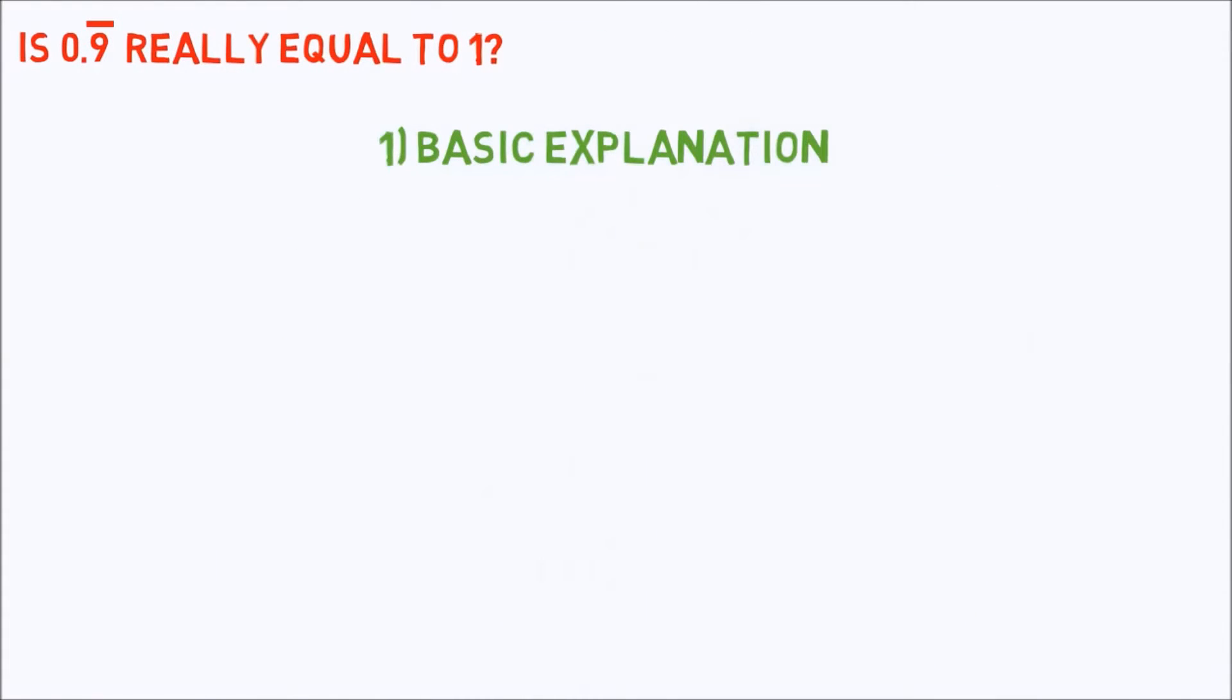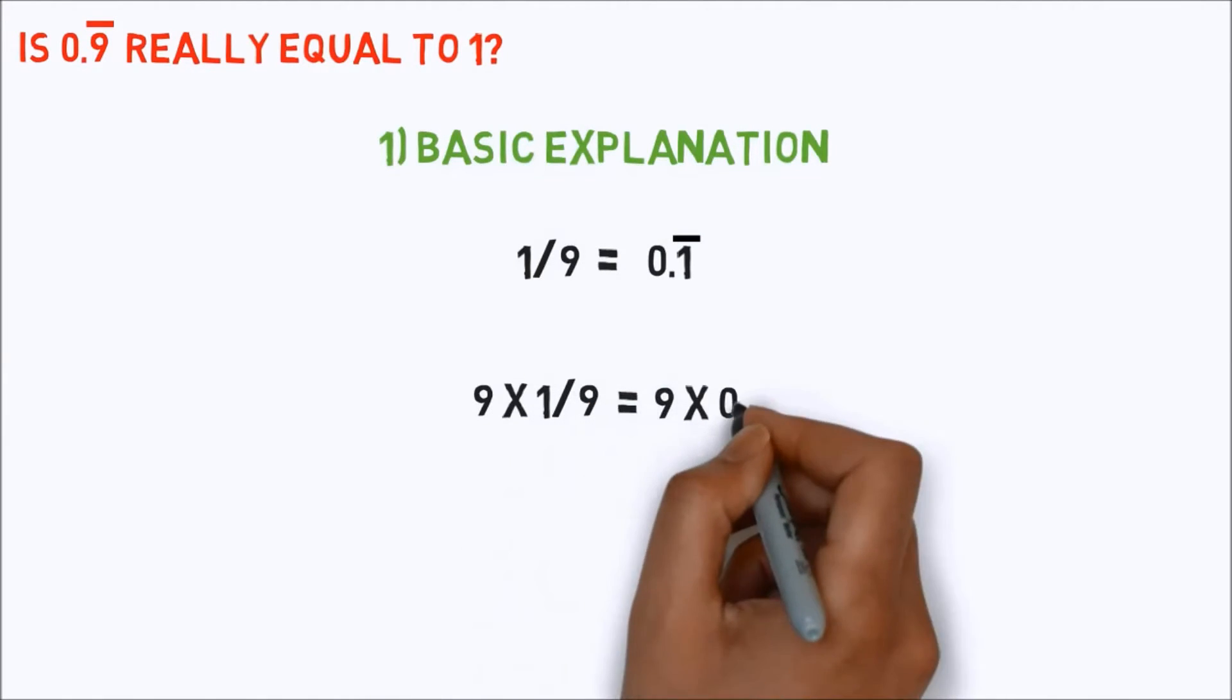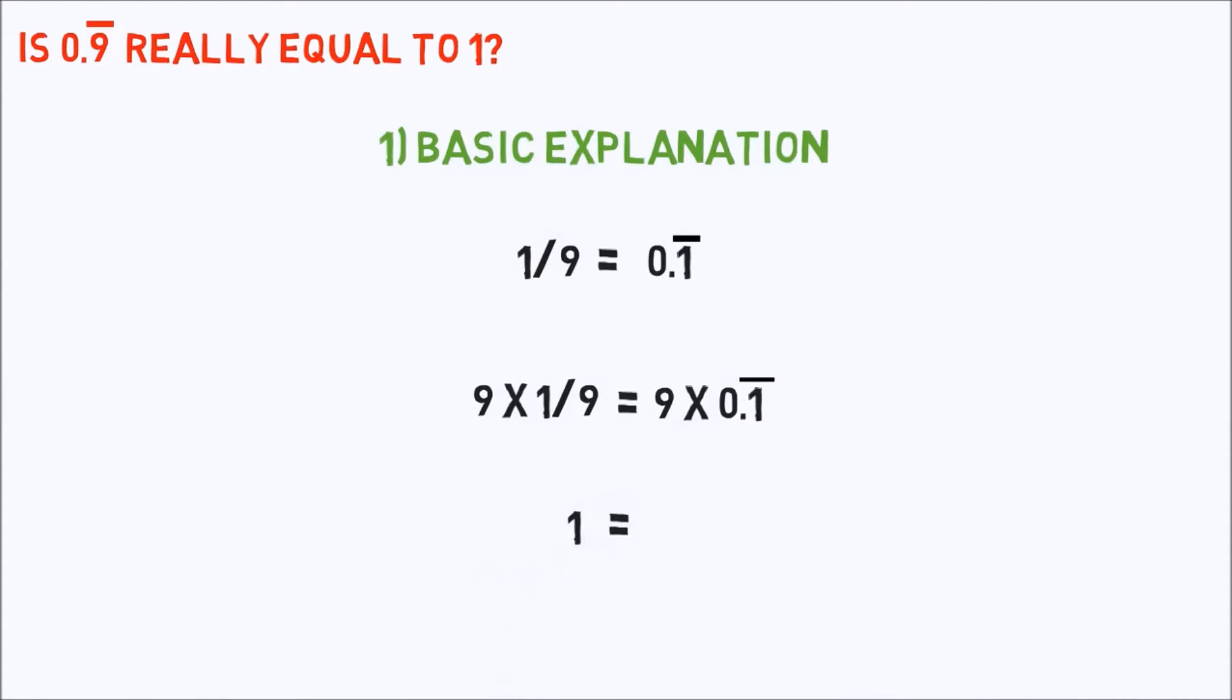Let's start with a basic explanation. 1 by 9 equals 0.1 bar. Multiplying by 9 on both sides, we get 1 equals 0.9 bar, which seems pretty accurate.